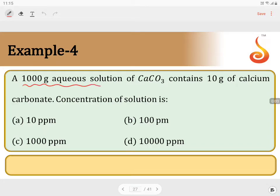A 1000 grams aqueous solution of CaCO3 contains 10 grams of calcium carbonate. Concentration of the solution is how much?